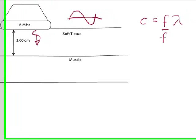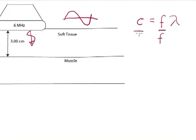So I'm going to divide both sides by the frequency. And over here the frequency cancels, so now I have a new equation. Lambda equals C over f.